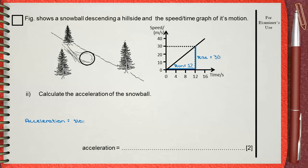Acceleration equals the slope or gradient, which is rise over run. The rise is 30, the run is 12. This gives a final answer of 2.5 meters per second squared.